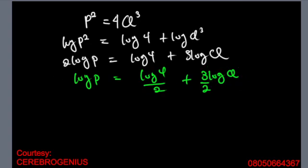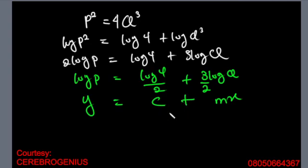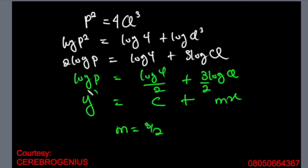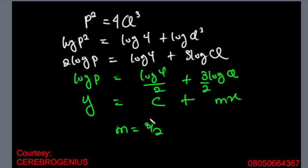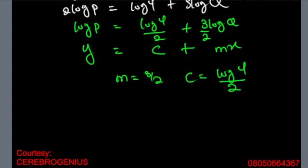We don't want the coefficient to affect our variable, so this becomes y = mx + c, where you put your mx where the variable is, then plus c. That means your slope will be 3/2, which is the coefficient of your variable. You are plotting graph of log p against log q, your slope is 3/2, and your intercept is log 4 divided by 2.